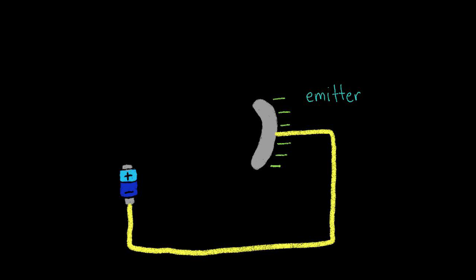The emitter plate is connected to the negative terminal of a battery, making the emitter plate negatively charged. Now we place another metal plate opposite the emitter, which we're going to call the collector. The collector is connected to the positive terminal of the battery, making it positively charged.